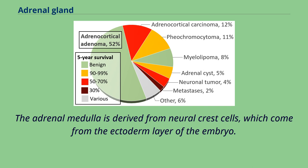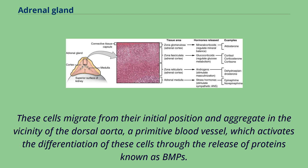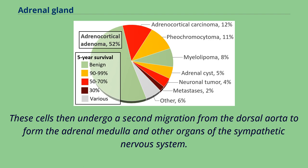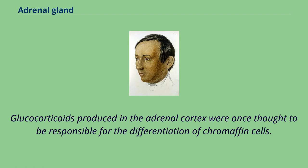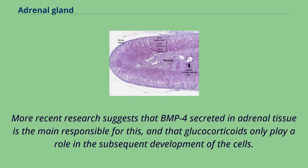The adrenal medulla is derived from neural crest cells, which come from the ectoderm layer of the embryo. These cells migrate from their initial position and aggregate in the vicinity of the dorsal aorta, a primitive blood vessel, which activates their differentiation through the release of proteins known as BMPs. These cells then undergo a second migration from the dorsal aorta to form the adrenal medulla and other organs of the sympathetic nervous system. Cells of the adrenal medulla are called chromaffin cells because they contain granules that stain with chromium salts. Glucocorticoids produced in the adrenal cortex were once thought to be responsible for the differentiation of chromaffin cells; more recent research suggests that BMP4 secreted in adrenal tissue is the main factor responsible, and that glucocorticoids only play a role in the subsequent development of the cells.